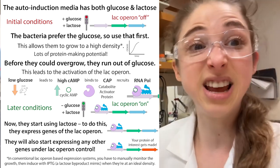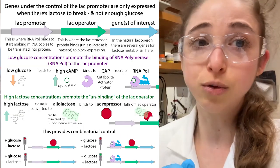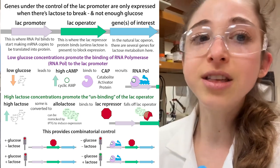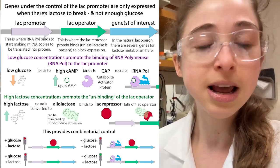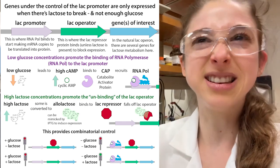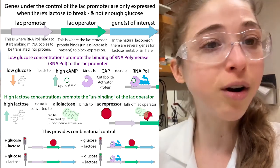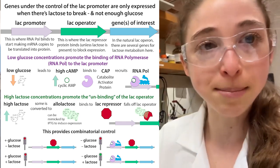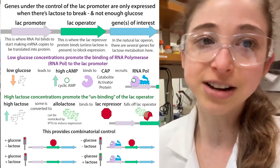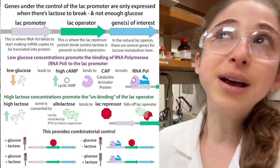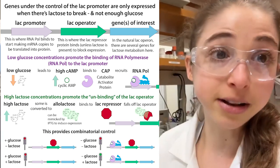They won't actually activate the lactose metabolism genes unless there isn't glucose — because there's a second regulatory layer. When glucose levels are low, a molecule called cyclic AMP is produced. Cyclic AMP binds to the catabolite activator protein (CAP), which helps recruit RNA polymerase to the promoter. But if there's a lac repressor sitting there, RNA polymerase still can't make the RNA. Conversely, if there is lactose but glucose is still present, RNA polymerase won't be recruited even if the path is clear.